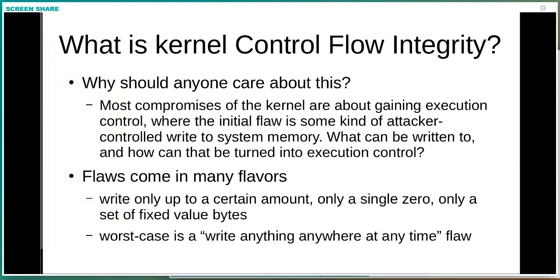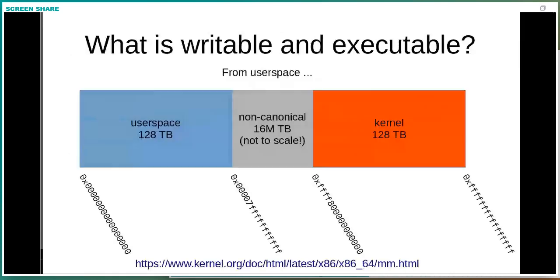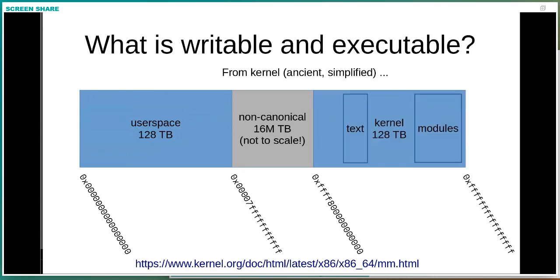Looking back long ago, there was actually writing directly to kernel code. As an attacker, if you have memory corruption and control over where you're writing, you could just write directly to kernel code and change how it operates. In that situation, the target has to be executable and writable — kind of ancient history. Protections existed: if you're trying to write to memory from user space, user space is writable and executable, under control of the user, but not the kernel because of memory protections. But if you end up with an exploit where you can start writing to kernel memory, suddenly you can write to everything.